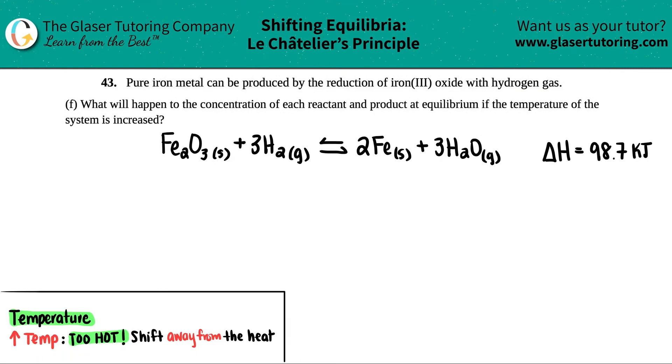Number 43, pure iron metal can be produced by the reduction of iron three oxide with hydrogen gas. And then we have letter F. What will happen to the concentration of each reactant and product at equilibrium if the temperature of the system is increased?